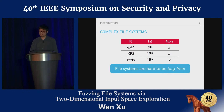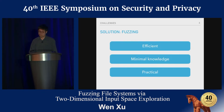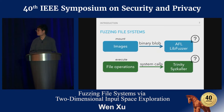However, it is very hard to eliminate bugs in file systems because they are quite complex and still under active development. That's why we choose fuzzing — because fuzzing is efficient, doesn't require much background knowledge about the target, and is proven to be practical.